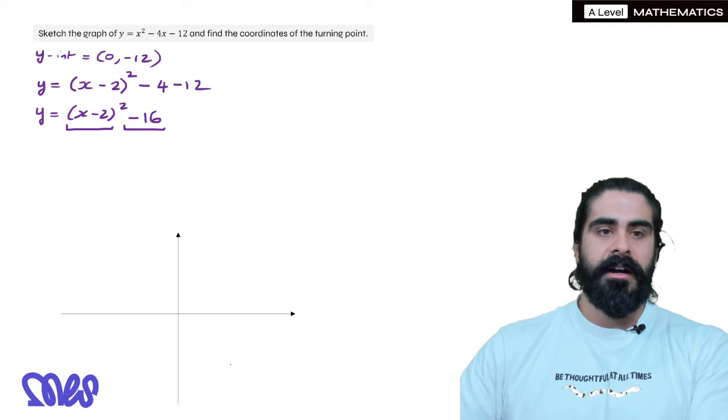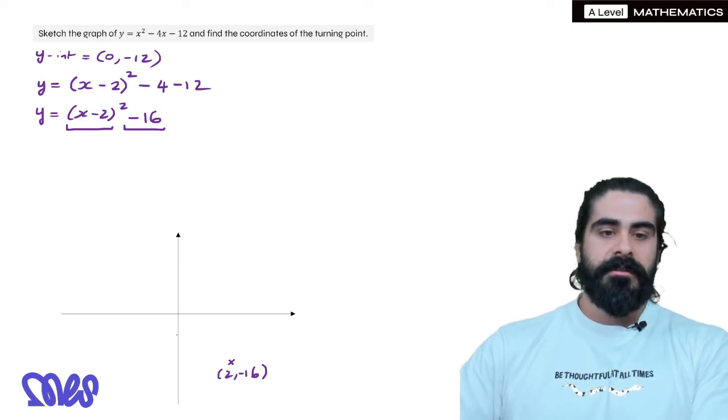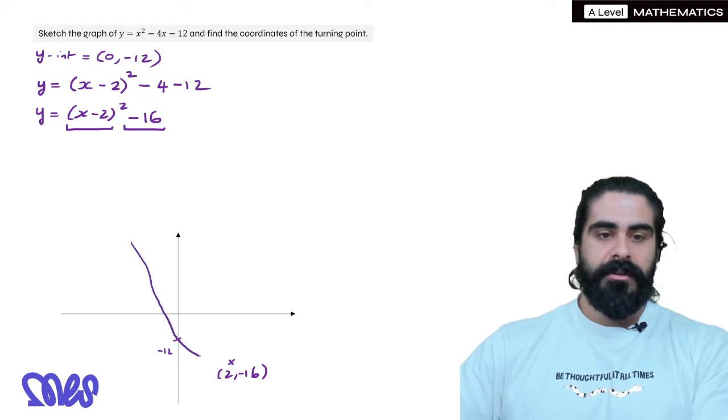So I can put that here, for example, 2, minus 16, and also it crosses the y-axis at minus 12, which I can put say here. Remember, it's just a sketch. So overall, my quadratic has to look something like this.